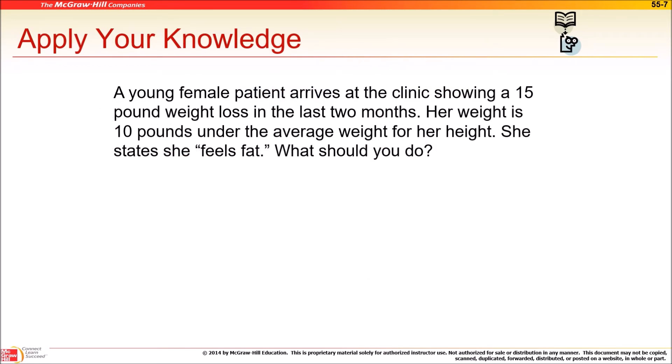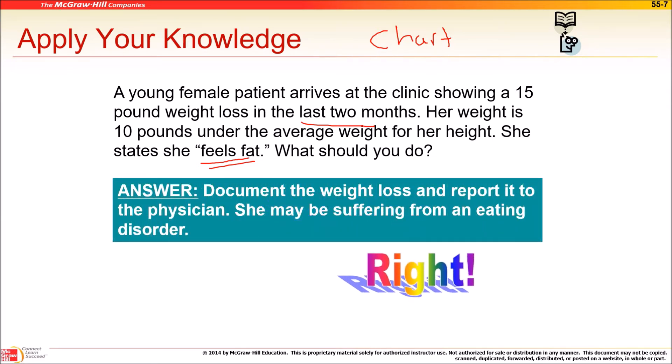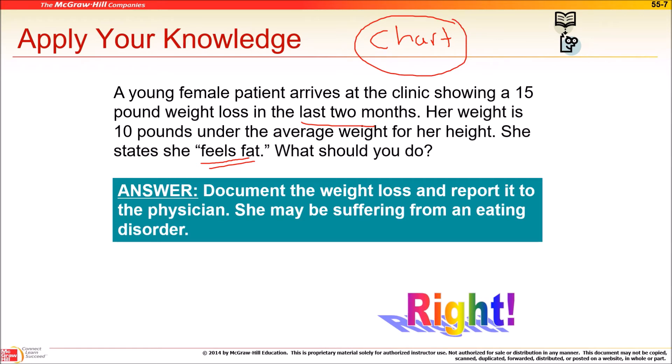A young female patient arrives in the clinic, fifteen pound weight loss in two months. Her weight is ten pounds under the average for her height, and she says she feels fat. No, you can't diagnose. You're an MA. What do you do? You chart exactly what they say. You do not say oh she's bulimic or anorexic, because it might not be. It might be because she has an injury in her stomach or something, right? All we can do is chart and tell the doctor. Document the weight loss, report it to the physician. That's it. It's not our job to diagnose. We just report.